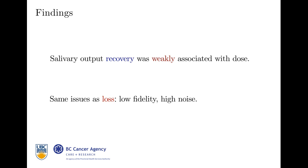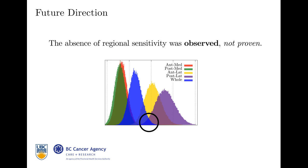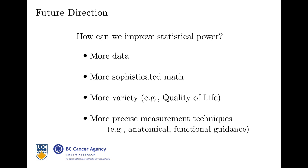Findings: salivary output recovery was weakly associated with dose. Same issues as loss — lots of noise. We kind of saw some differences, but we can't in good faith claim that there are differences. But the absence of regional sensitivity was observed — we didn't prove that it wasn't there, so we can keep going with this. To narrow the Gaussians and separate the distributions, we can use more data, more sophisticated math, quality of life metrics, and in particular, more precise measurement techniques like anatomical or functional information.